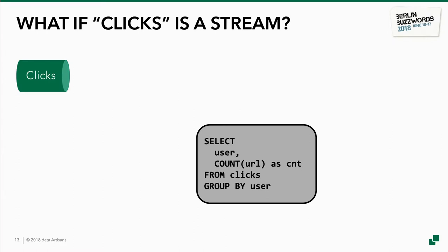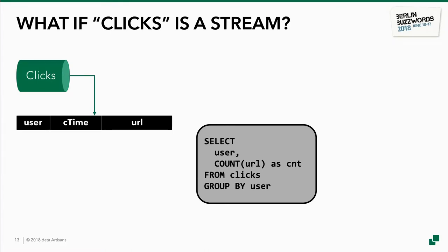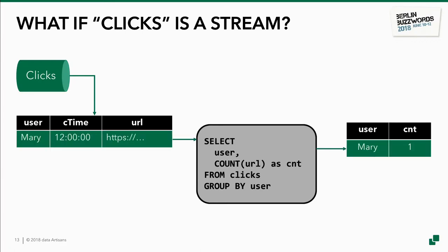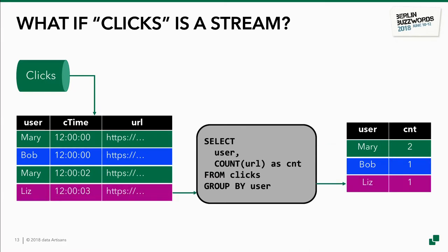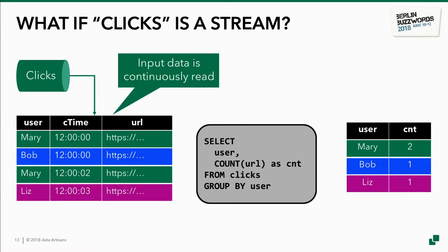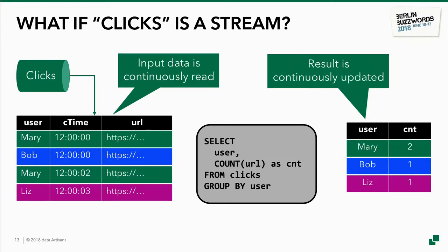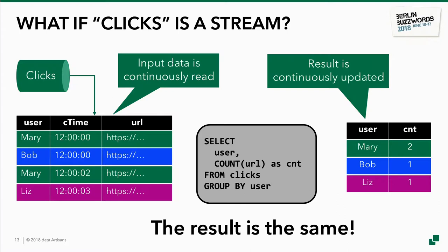But what happens if clicks is a stream — a Kafka topic, Kinesis, or whatever other stream you have? The table still has some kind of schema, but records appear over time. As new records arrive, we can evaluate the query and incrementally compute the result. We got a record for Mary and another for Bob — both counts are one. If we get another one for Mary, we increment her counter to two. If we get one for Liz, we add a new row for Liz. So the data is continuously ingested, and the result is continuously updated. In both cases — batch and streaming — the result is the same given the same input data.